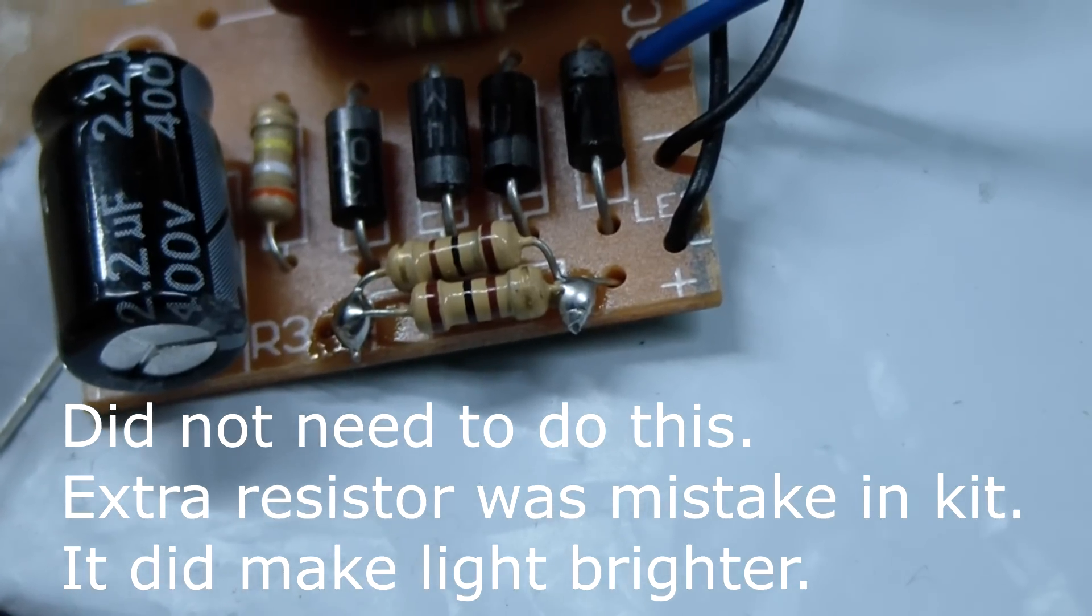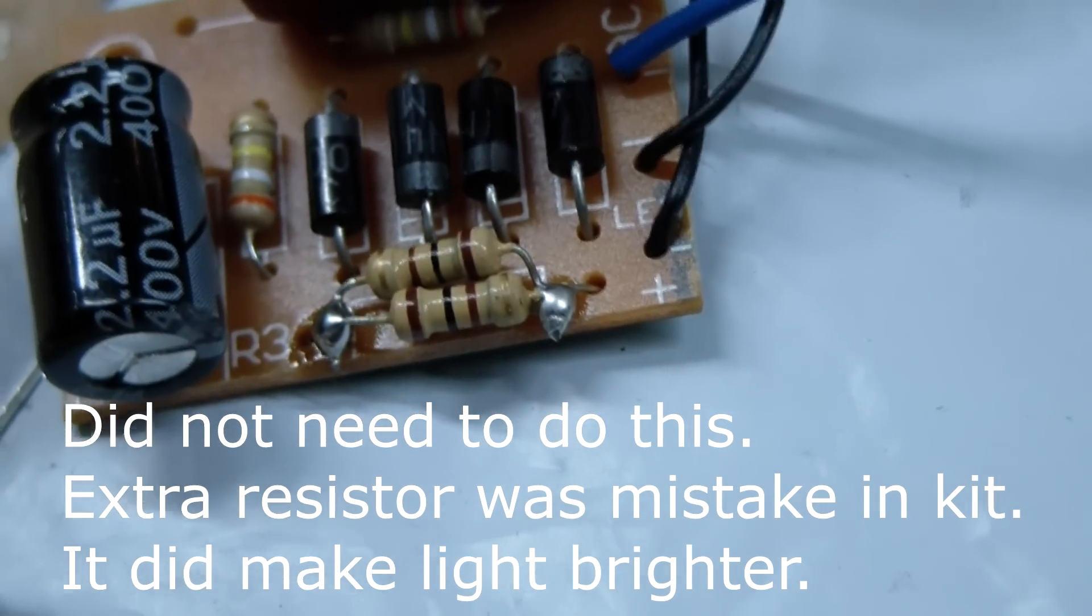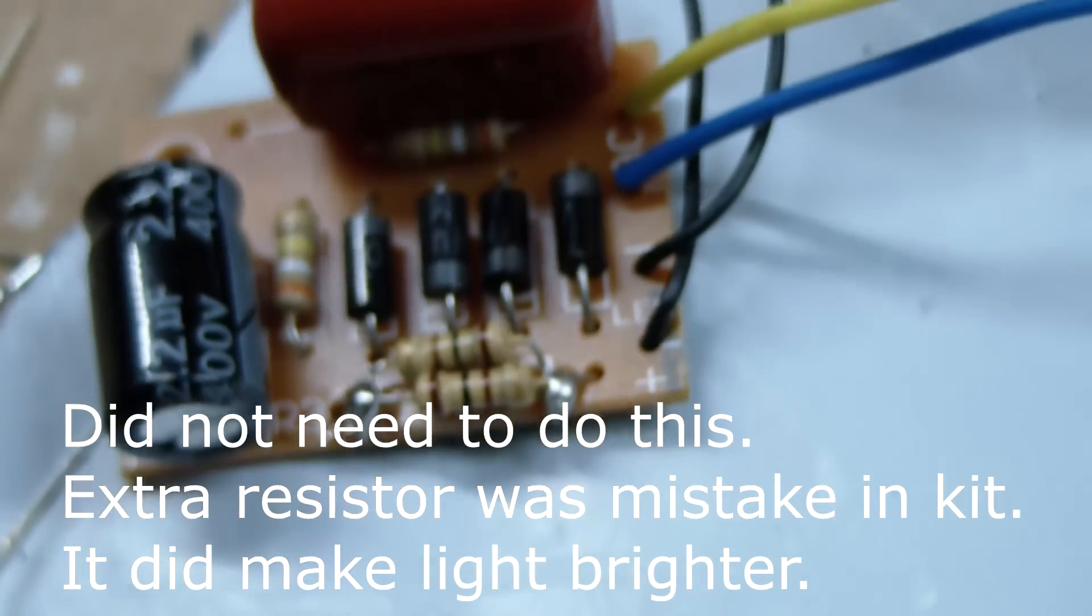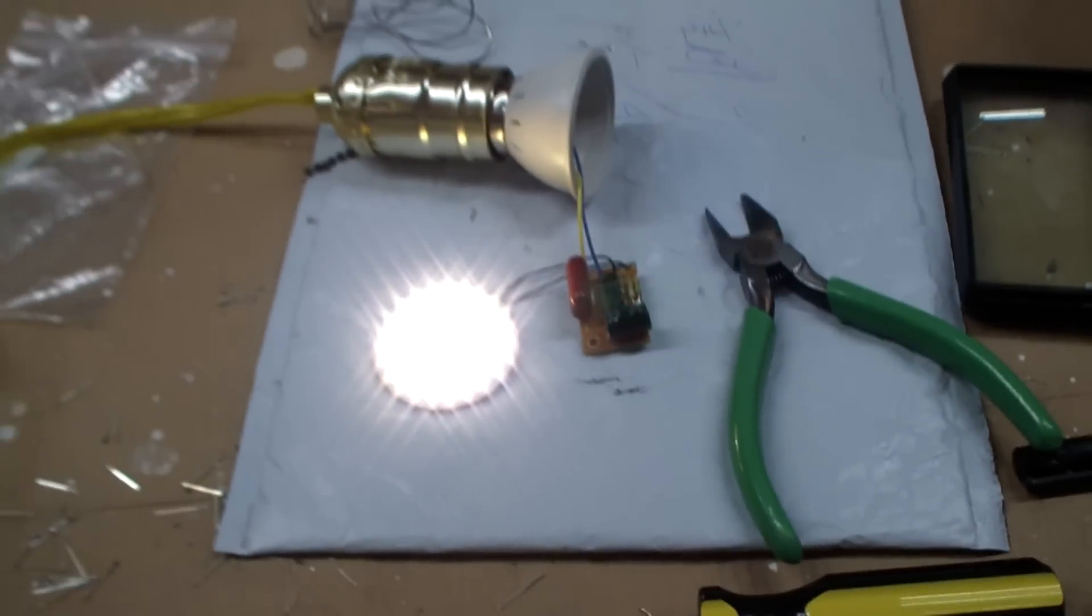You can see I paralleled the two 100-ohm resistors together, giving it an effective resistance of 50 ohms, and we'll see what happens. Well, it seems to work. It seems to have a bit more brightness.